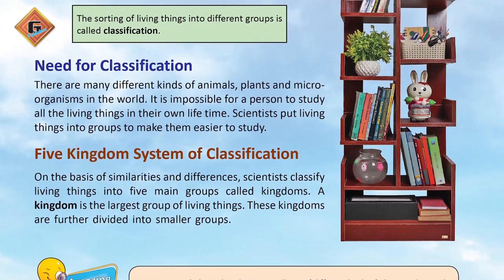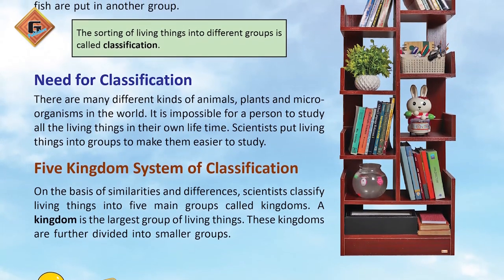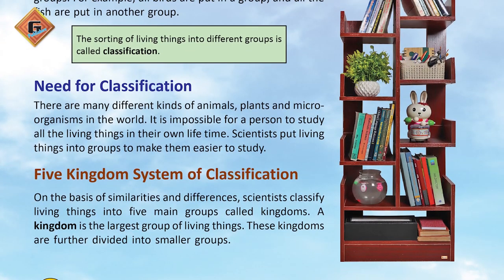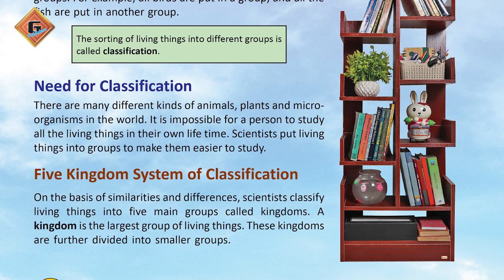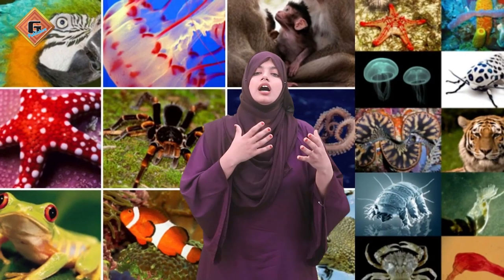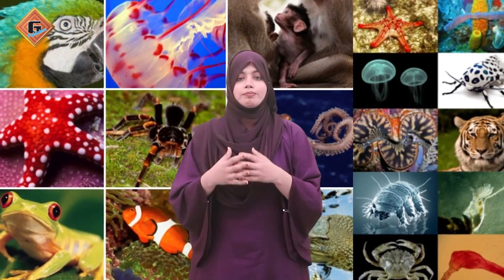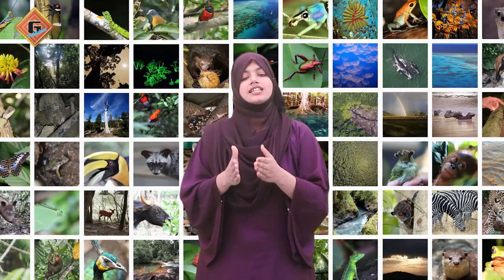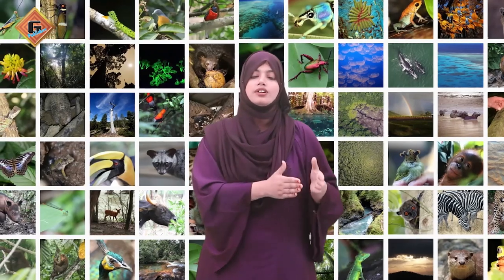Ab aap students ko introduce karwayein ki humne kis tarah se classification ki hai, hamari grouping ka kya maqsad hai, aur humne kis base par grouping ki hai. Jis tarah se hum apni cupboard ki shelf ko books ki types ke according ya cheezein arrange karte hain, isi tarah aap students ko examples dekar batayein. Isi tarah se aap tamam kingdoms ka introduction students ko karwayein aur batayein ki humne iske andar kaise type ke animals ko rakha hai.